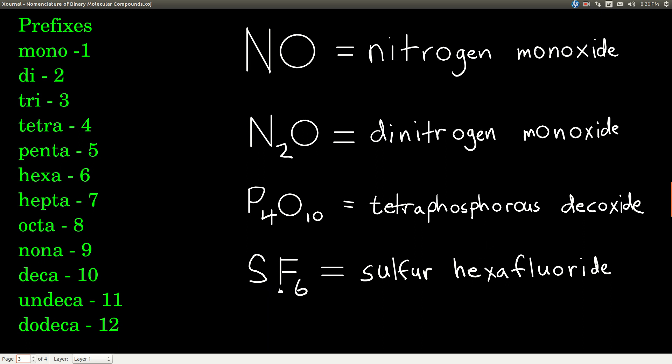Here, one sulfur and six fluorines. Sulfur and fluorine are both non-metals. We do not use mono for the sulfur. So we just say sulfur hexafluoride.